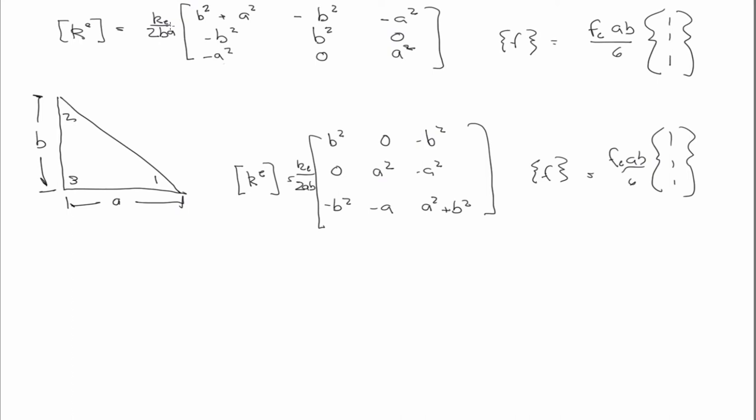So can anybody recognize, basically, given the node number, what the difference is between the first matrix and the second? Keep in mind, this one was numbered 1, 2, 3.